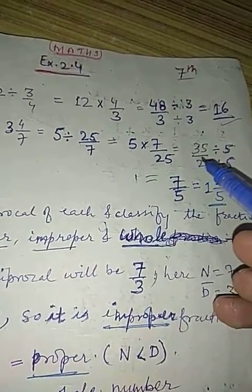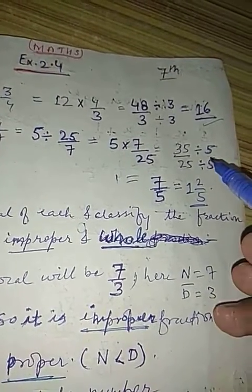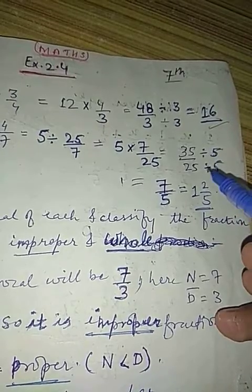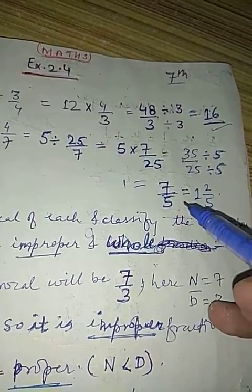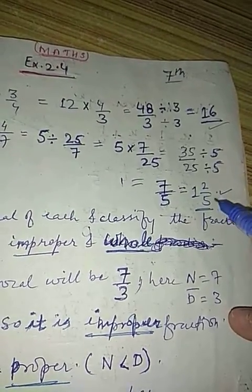Answer will be 35 upon 25. Their common factor is 5, so divide by 5. You will get 7 upon 5. Change to mixed fraction, you can write it as 1 whole 2 upon 5.